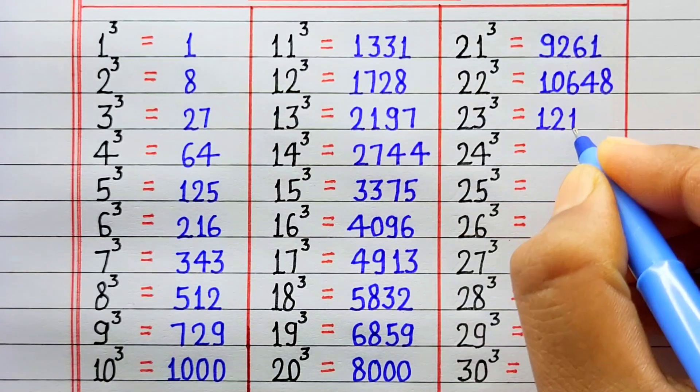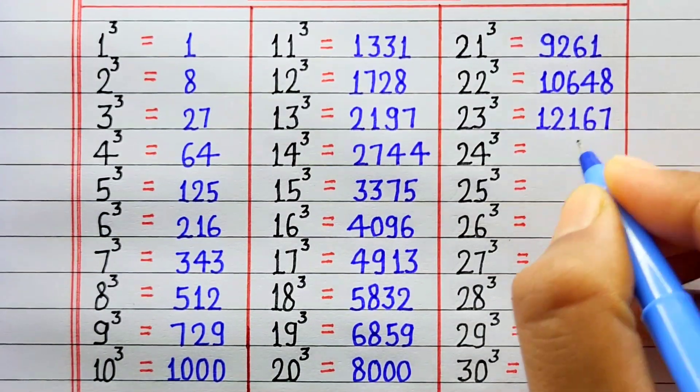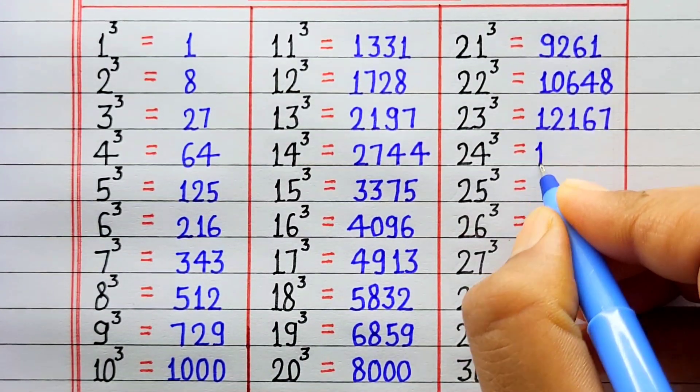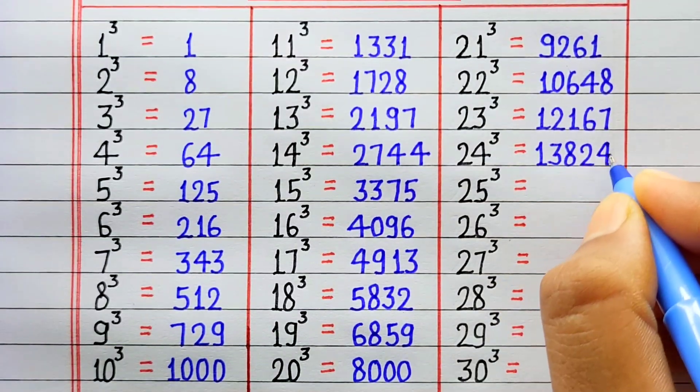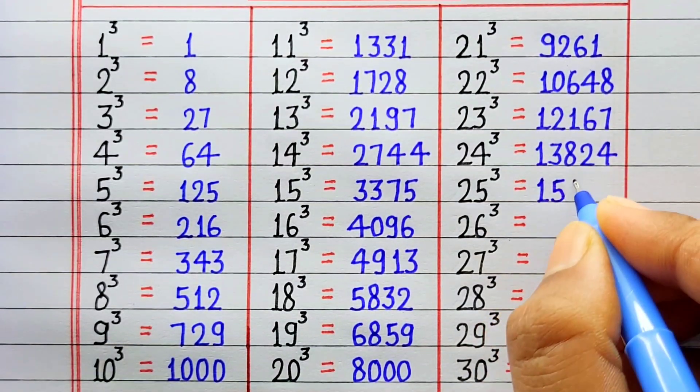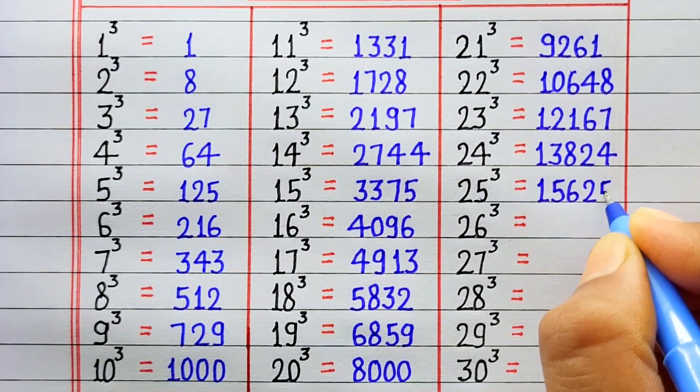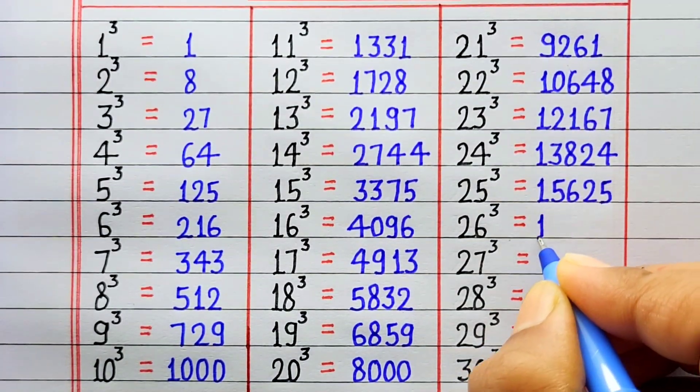Cube of 23 is 12167. Cube of 24 is 13824. Cube of 25 is 15625. Cube of 26 is 17576.